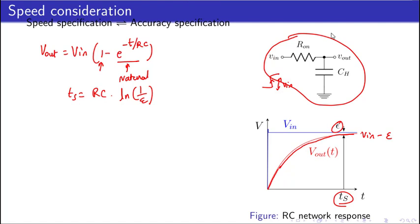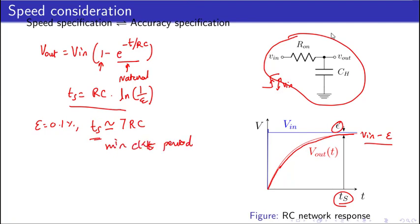If we allow a tolerance of ε (for example, 0.1%), the time Ts required for the output to reach VIN − ε is given by Ts = RC·ln(VIN/ε). This Ts defines the minimum clock period for Φ to be high. It in turn defines the maximum clock frequency as Fmax = 1/(2·Ts).